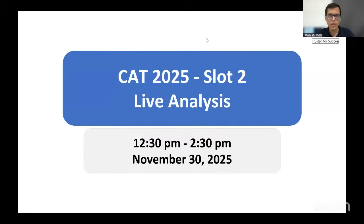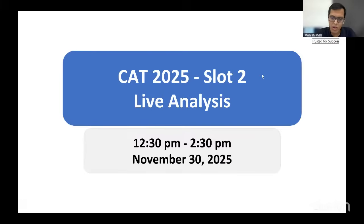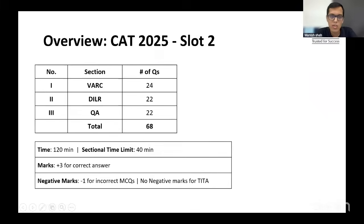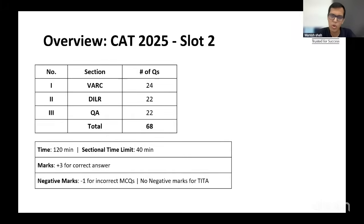The second slot of CAT 2025 has ended, and here is an analysis of the entire slot. This is the second part — the first analysis was also aired on YouTube. The test was pretty standard; the number of questions was the same as last year. VARC had 24 questions, LRDI had 22, and QA had 22 — the exact look and feel of CAT 2024 was replicated in this second slot as well.